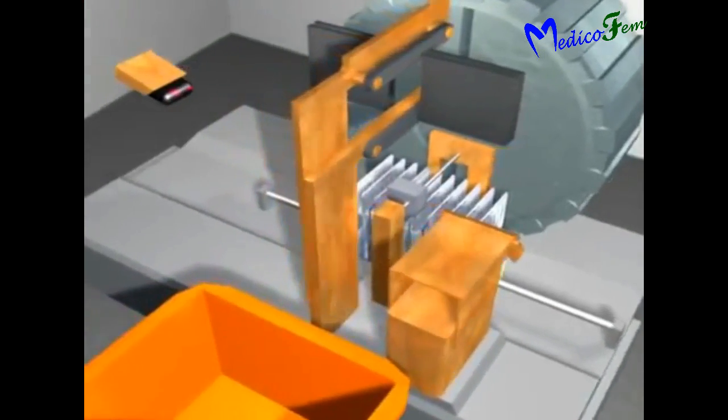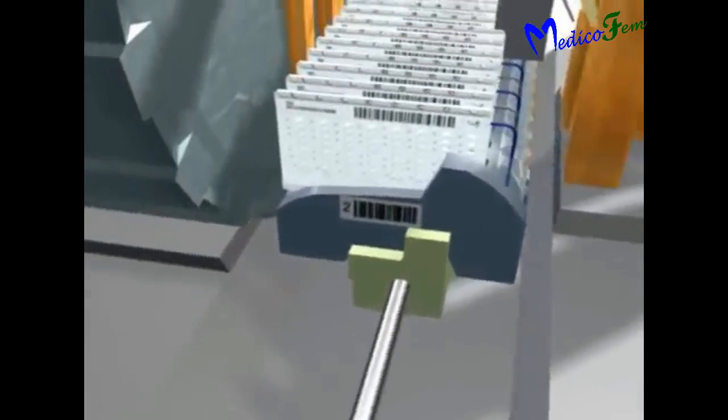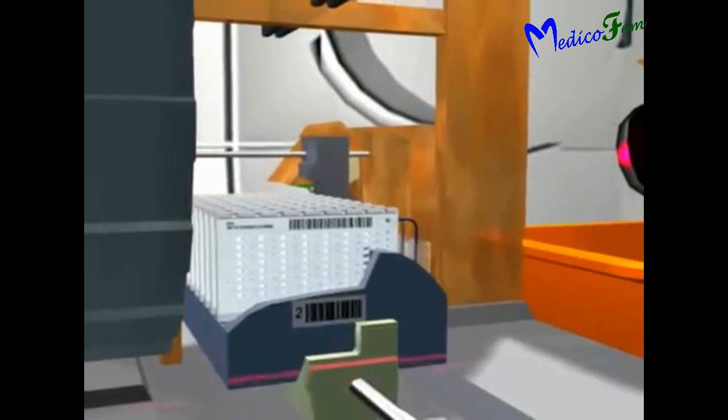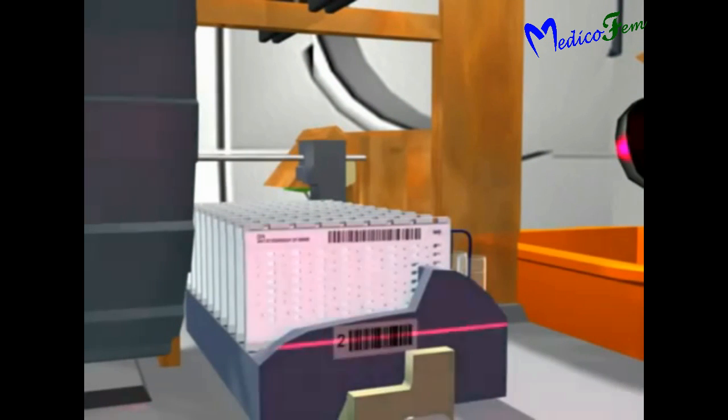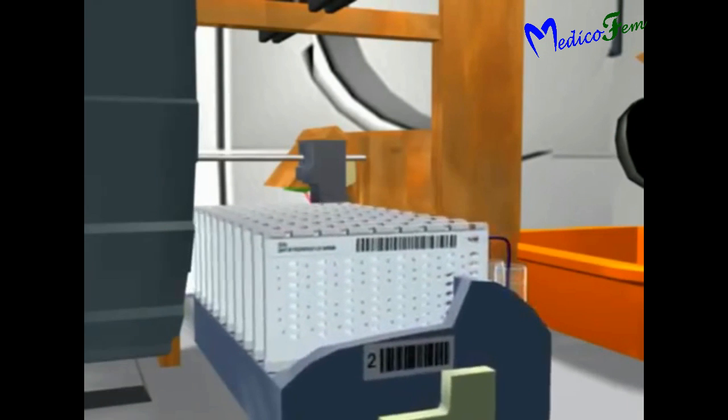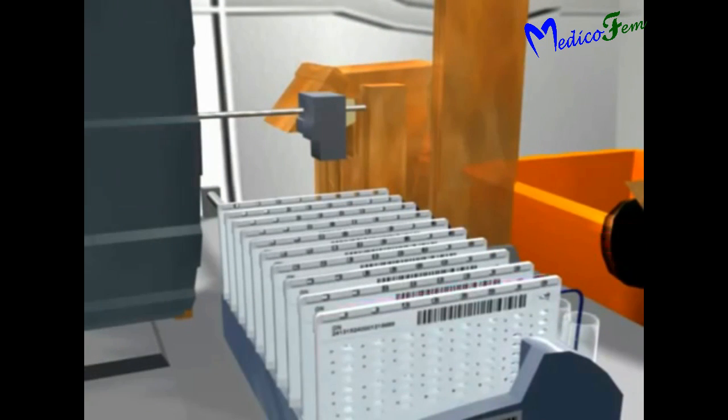In the incubator chamber, first one scanner will scan the load code. Then that scanner will scan the code of each card. One heated cutter will cut and seal all the tubes of each card.